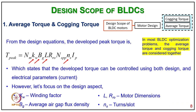Coming to average torque and cogging torque: on the design equation, the developed peak torque is equal to Nm × Kw × Pg × L × Ro × S × Pp × Ns × Ip. This states that the developed torque can be controlled using both design and electrical parameters, typically current. The key design parameters include Kw as winding factor, Pg as average air gap flux density, L and R as motor dimensions, and S as the turns per slot.